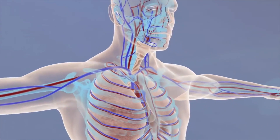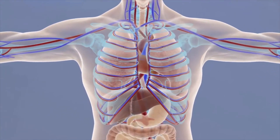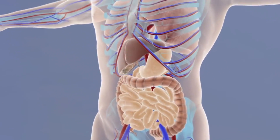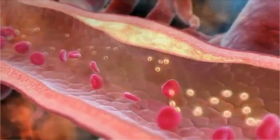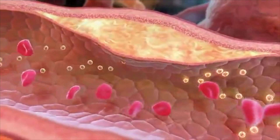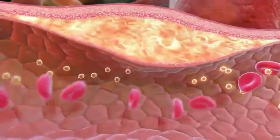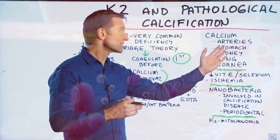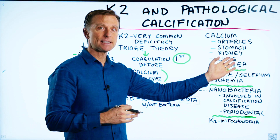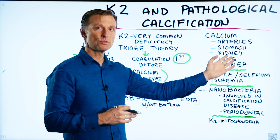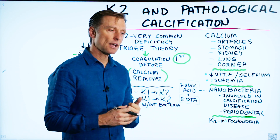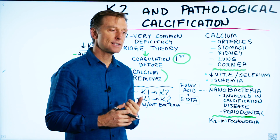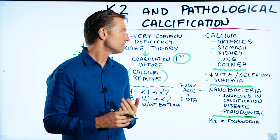This is a condition in your body where calcium is developing in the wrong places. It's usually involved in plaquing in the arteries. It could also be the calcification of part of your stomach, kidney, as in kidney stones,